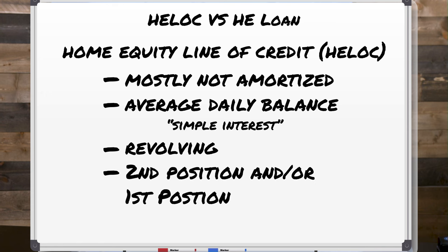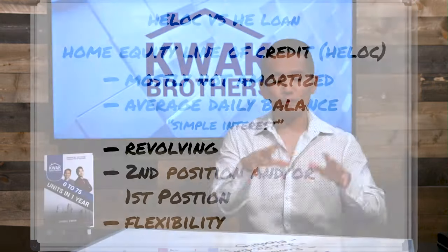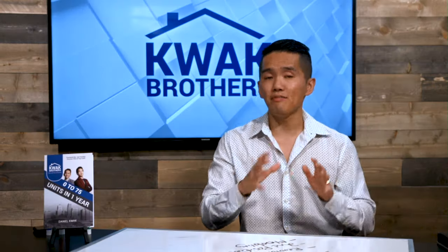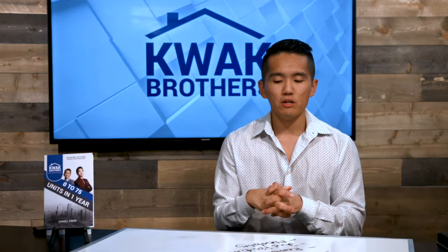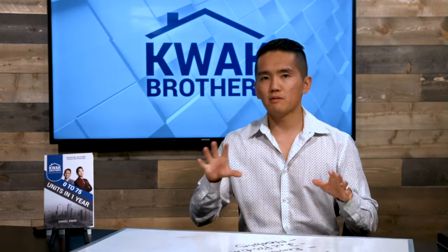Or it can also be first position. What that basically means is you can get a HELOC on top of your existing mortgage, but you can also replace your existing mortgage with a first position HELOC — all that you owe is a HELOC — which can give you a lot of flexibility. So a home equity line of credit is definitely not the same thing as a home equity loan; they are two different loan products that do different things.